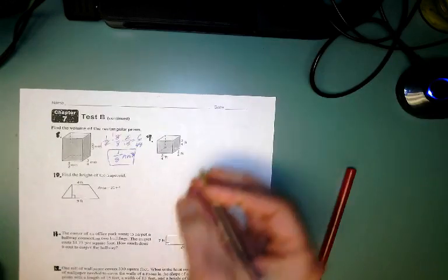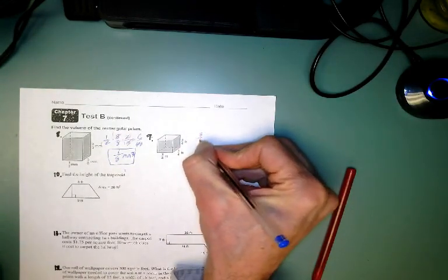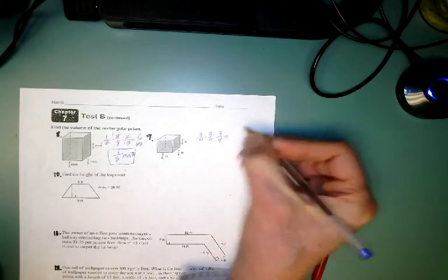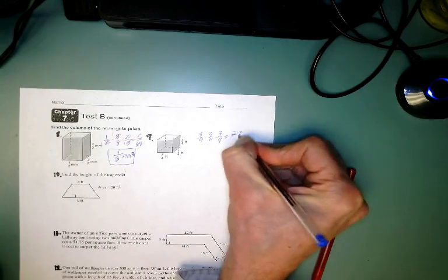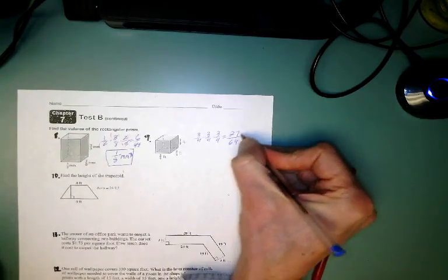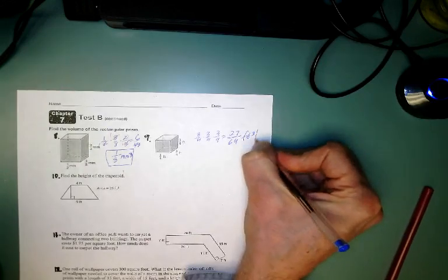Alright. Here, it's a cube. 3 fourths times 3 fourths times 3 fourths times 3 fourths. 3 times 3 times 3 is 9 times 3 or 27. 4 times 4 times 4 is 16 times 4. 64 feet cubed. Boom. I'm done. I can't simplify. That's as simple as it gets.